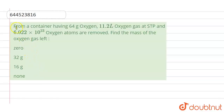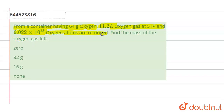The question is: from a container having 64 grams of oxygen, 11.2 liters of oxygen gas at STP and 6.022 × 10²³ oxygen atoms are removed. Find the mass of oxygen gas left.